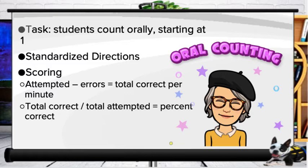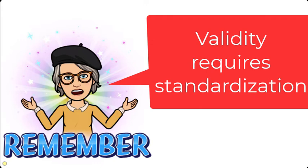For oral counting, the task is students counting orally starting at one. We have standardized directions, and our scoring comes from the numbers attempted minus the errors to give us total correct per minute, or total correct over total attempted to give us a percent correct. In order to make valid, normative, national, state, district, or school decisions, we have to standardize the directions, administration of the probe, and scoring.